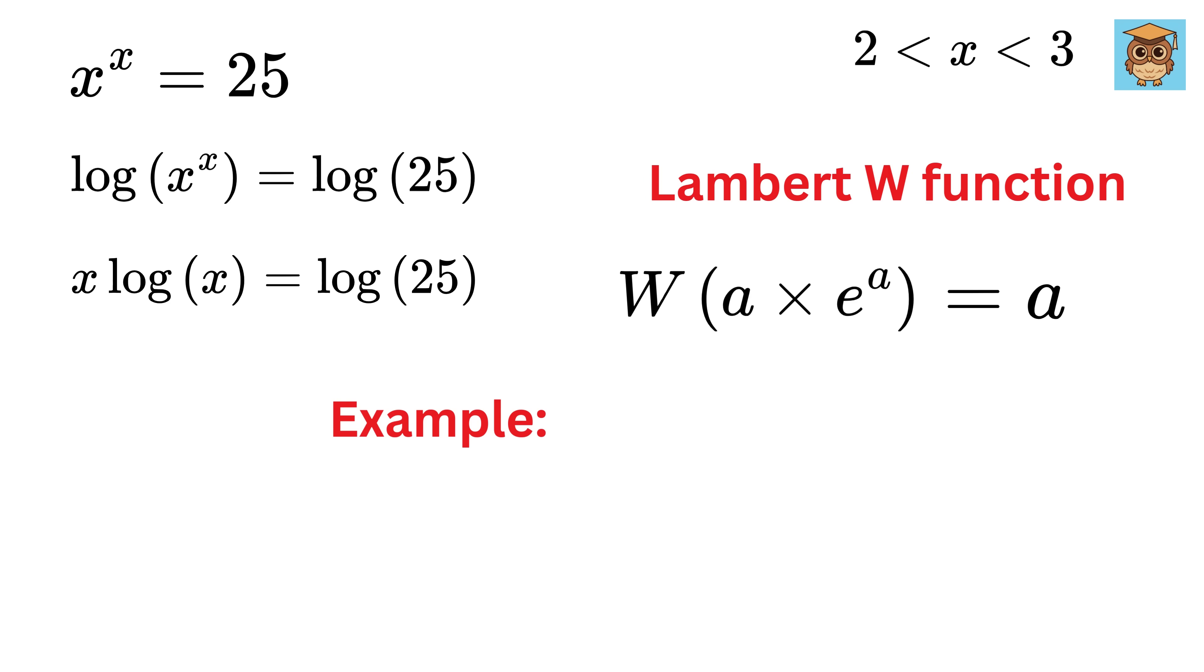Suppose for example we have the expression 3 times e to the power of 3. You can see that this is of the form a times e to the power of a, and the value of a here is 3. So now if we apply the Lambert W function on this expression, we get the result as 3.